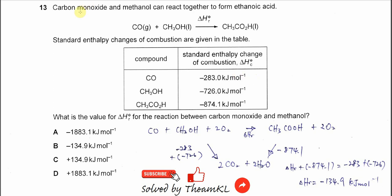Question 13. Carbon monoxide and methanol can react together to form ethanoic acid as shown in this equation. Standard enthalpy change for the combustions given in the table for all the reactants and compounds: carbon monoxide, methanol, and ethanoic acid.